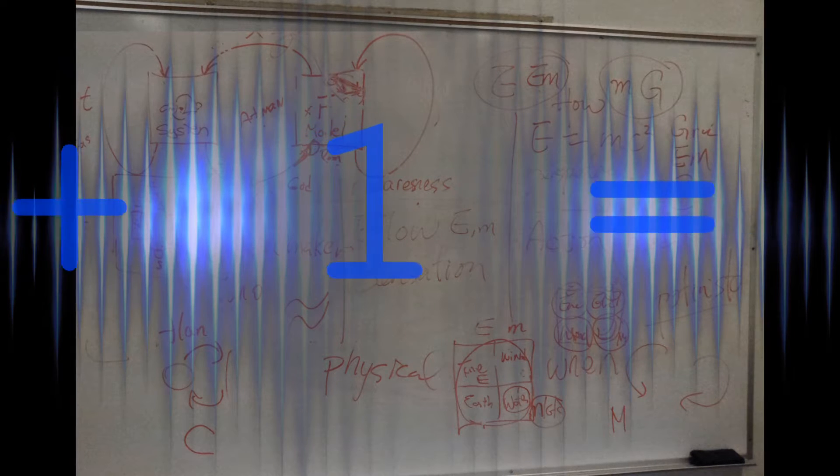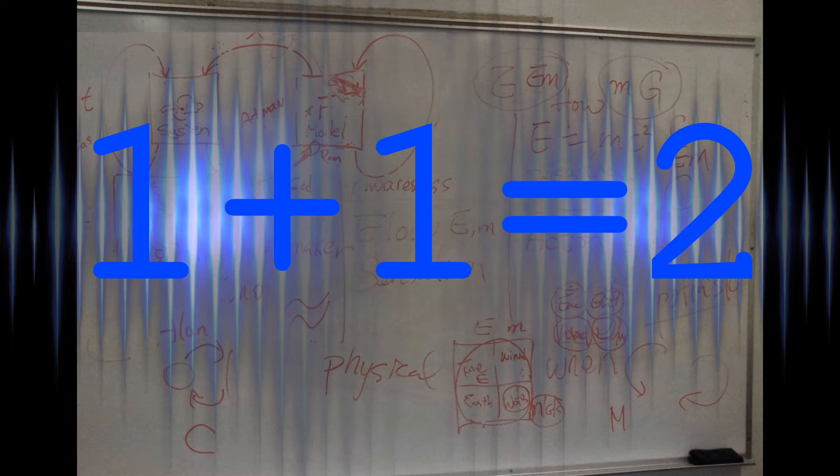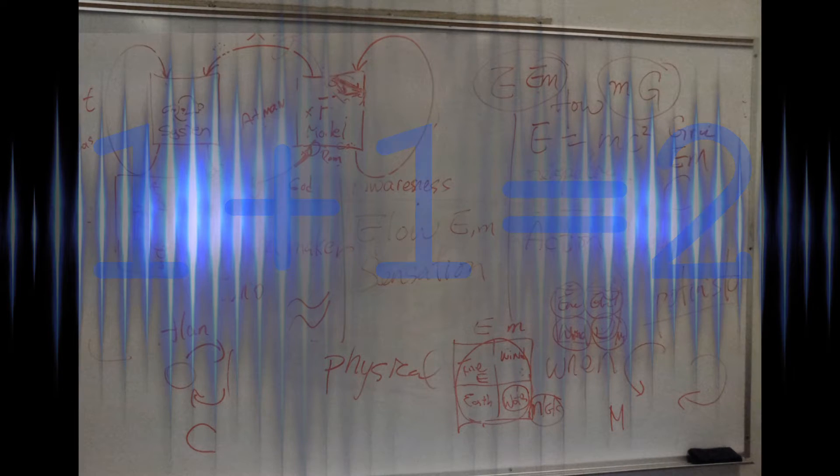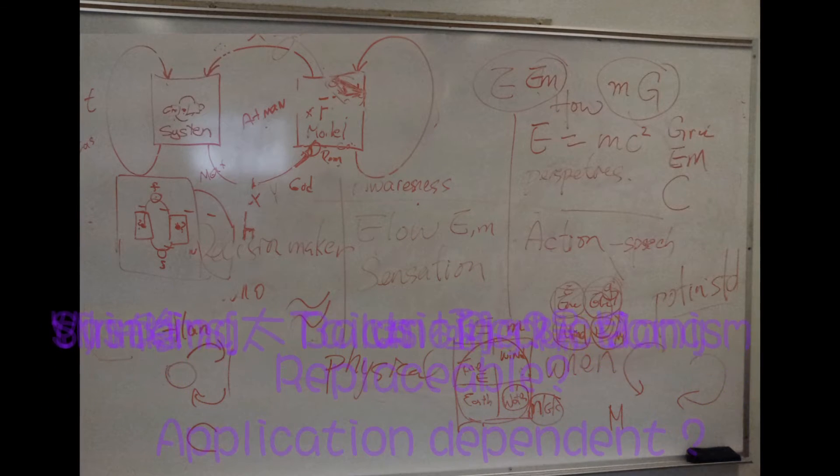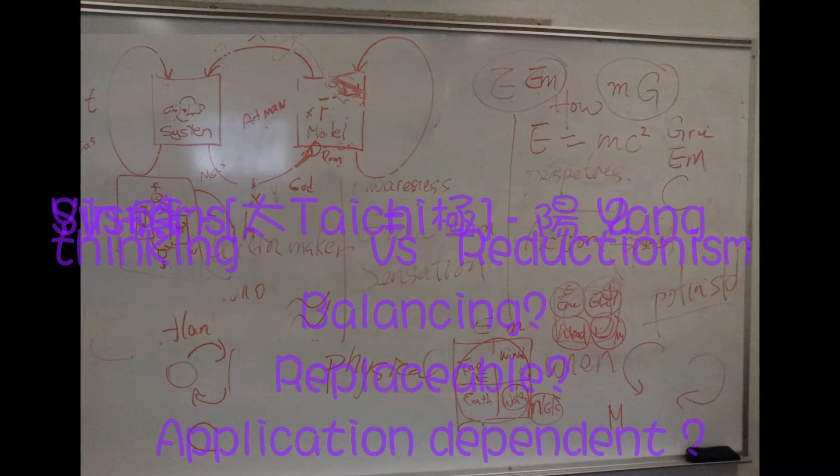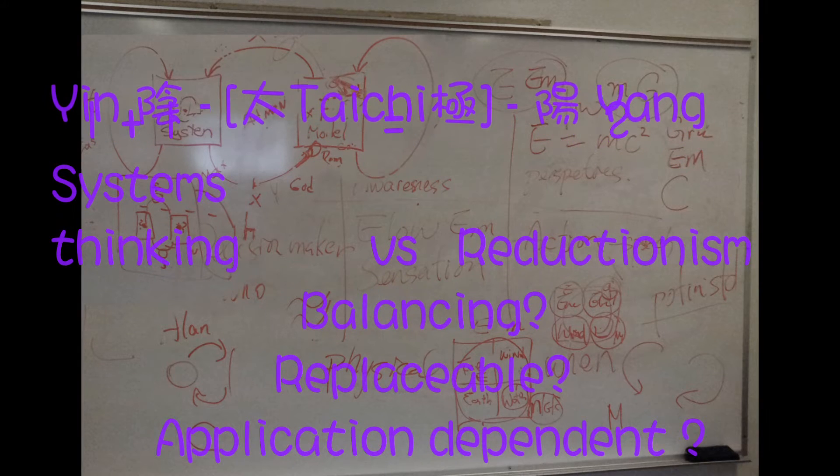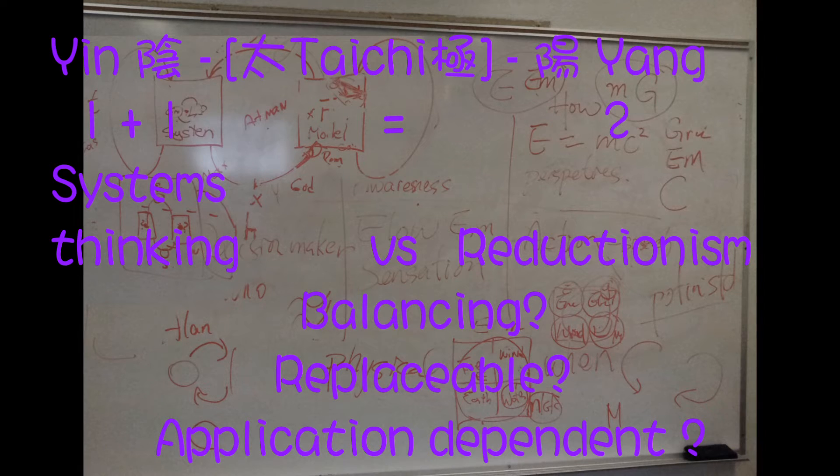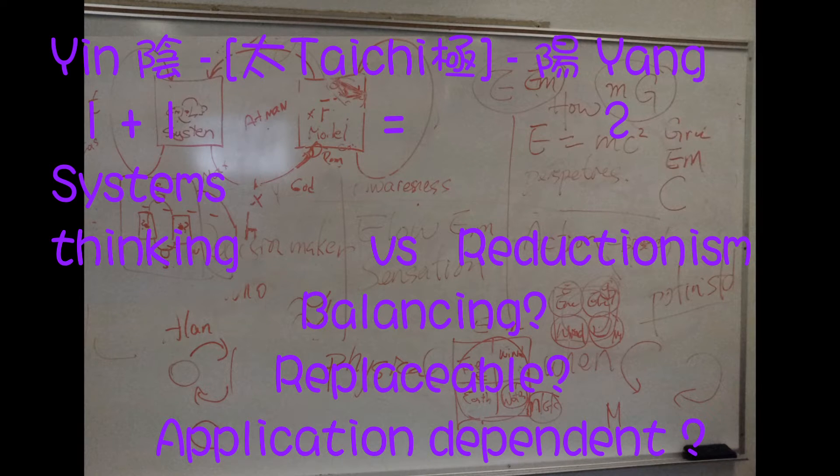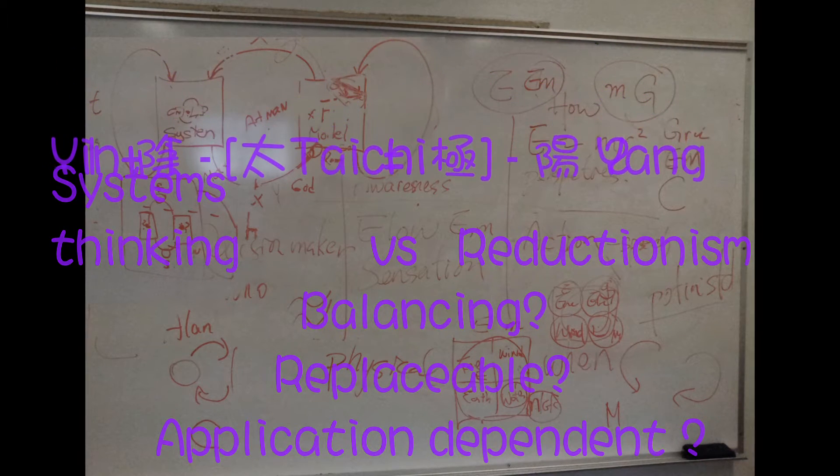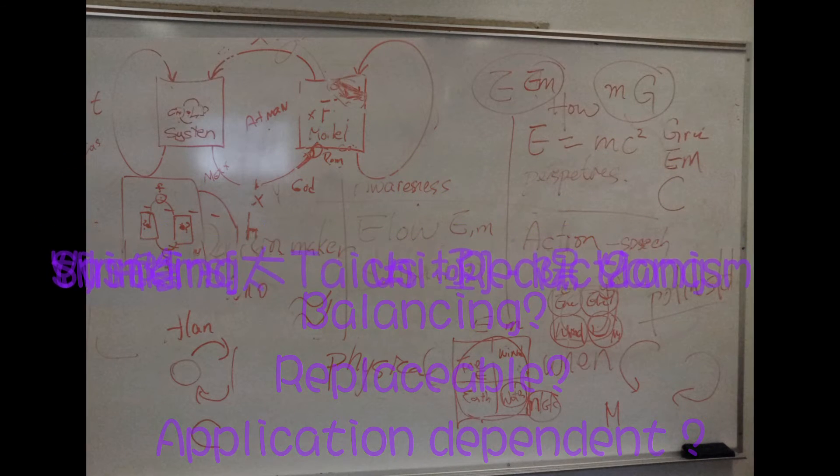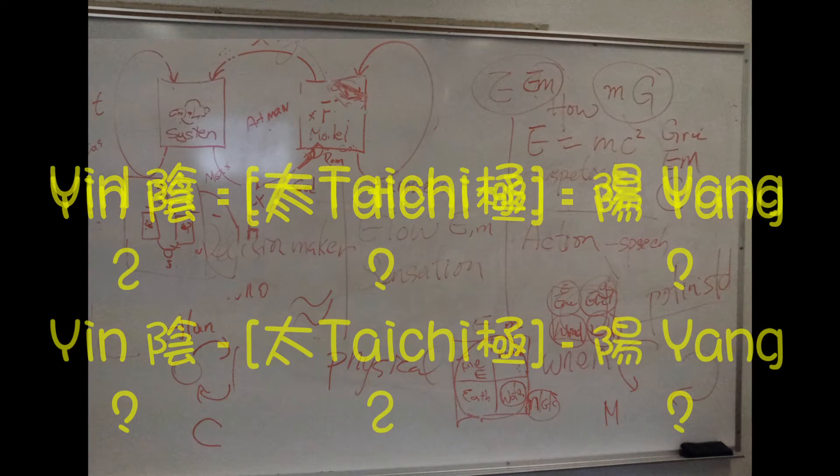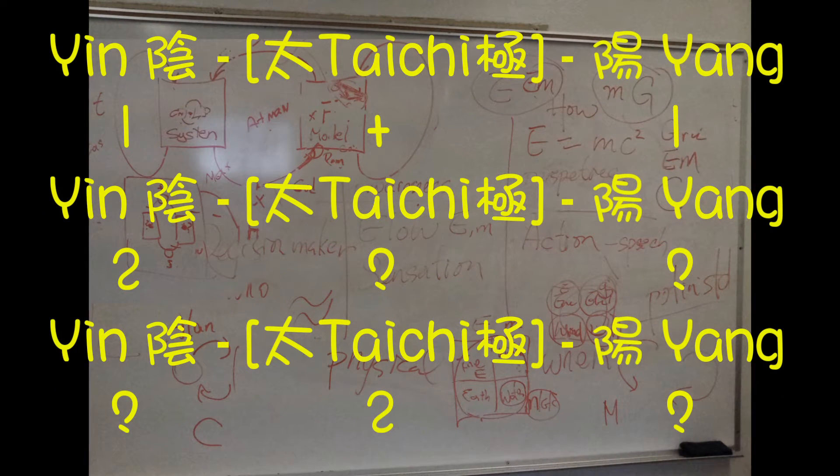Going back to the most important equation in system theory: one plus one equals two. System thinking will say one plus one, there's three things in there. The reductionist will say no, it's only two. It's actually two sides of the equation - the same thing again, the yin and yang and the tai chi. You have to look at them at the same time. Different applications will stress different components.